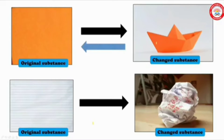Let us discuss another example. Take a piece of paper and crush it, and after some time we will get back the original substance by unfolding the paper. In these two examples, we can see that we are changing the shape of paper.